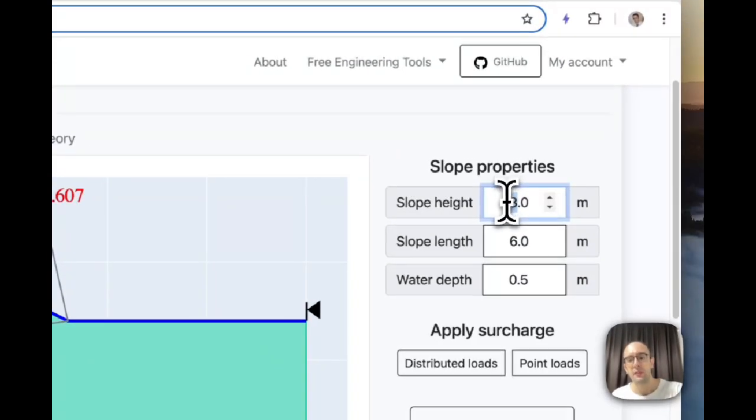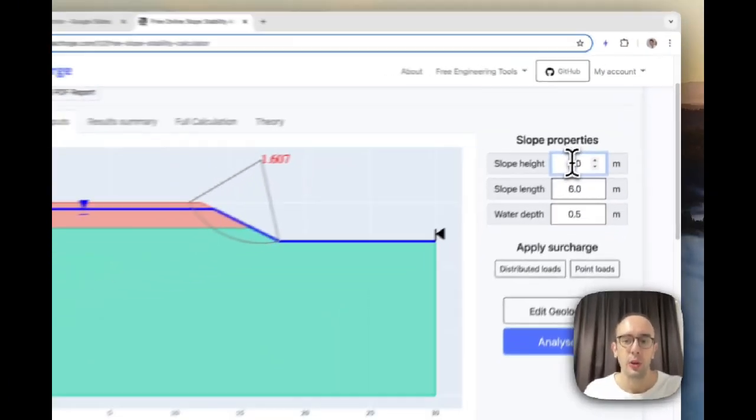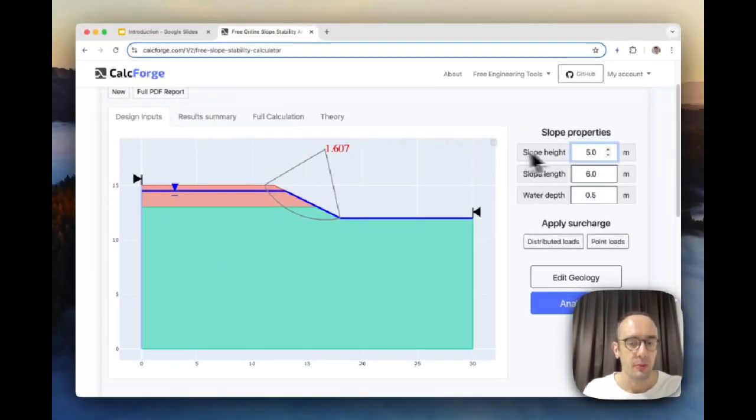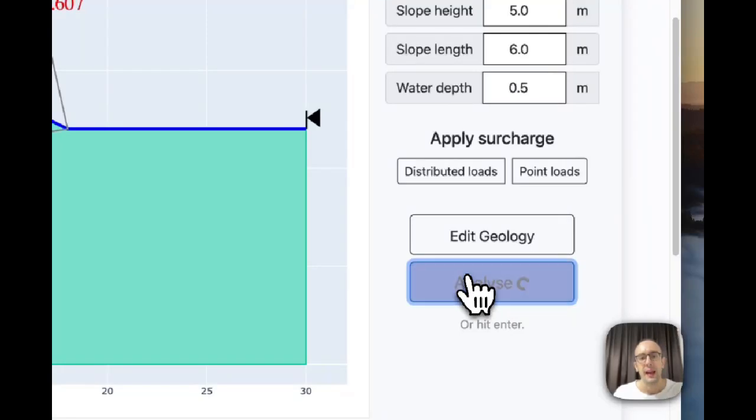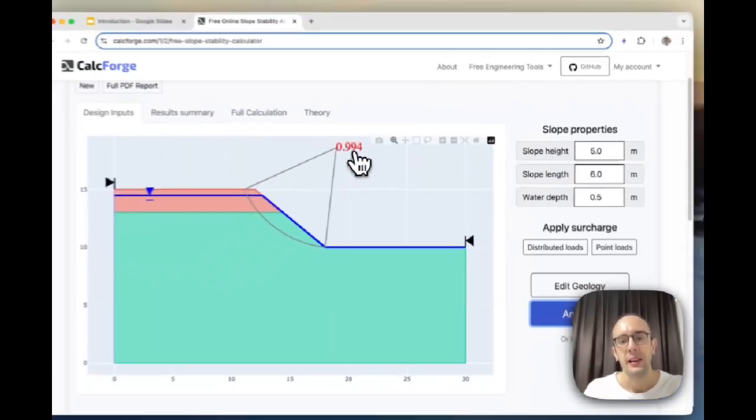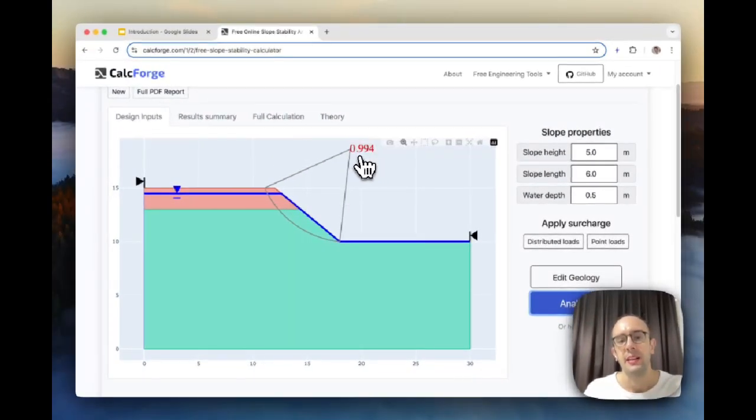So I'm just going to configure this a bit differently. Let's say I'm going to change this slope height to five. Maybe just have a think what do you think will happen to this factor of safety if I'm increasing the slope height. If I hit analyze, what you're going to find is this factor of safety has now reduced. We are more likely for a failure to happen and in this case any factor of safety which is under one is basically a failure of some sort, so this is saying the slope is now unstable.